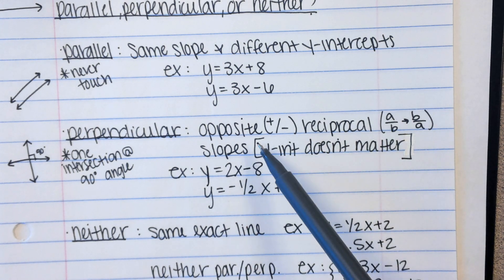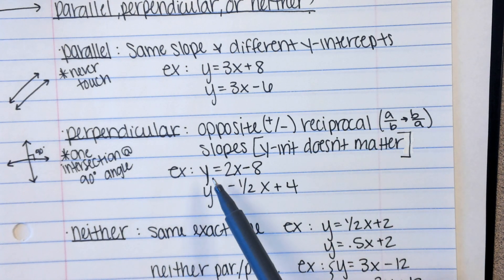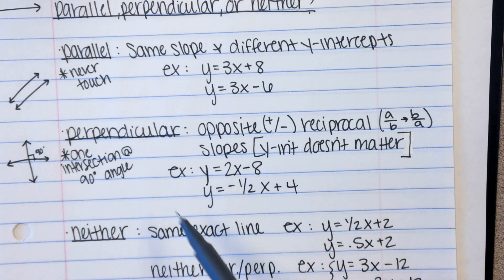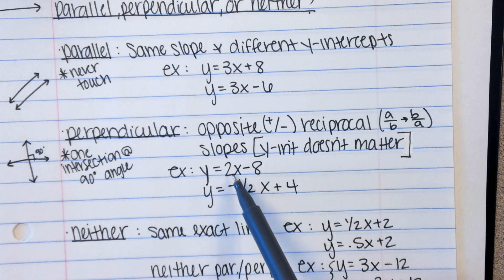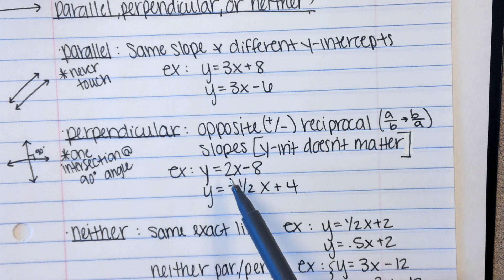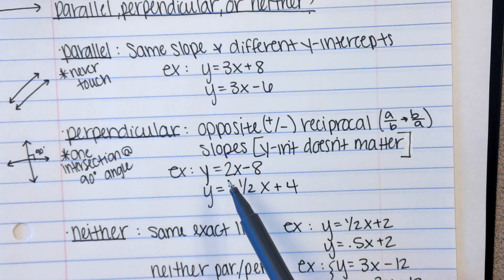So let me just make another bracket. There we go. So perpendicular lines, the y-intercept doesn't matter. The y-intercept could be the same or it could be completely different. I mean, it doesn't really matter. What matters with perpendicular is that their slopes are opposite and reciprocal. So if we look at an example, we have y equals 2x minus 8 and y equals negative 1 half x plus 4. These are perpendicular because their slopes are opposite. So one is positive, one is negative, and they're reciprocals. If you turn 2 upside down, you get 1 half. Okay? Or vice versa, if you turn 1 half upside down, you get 2.